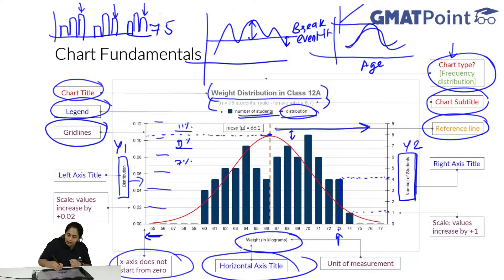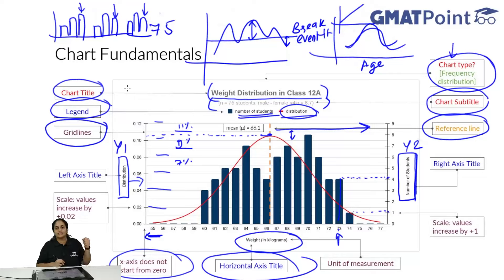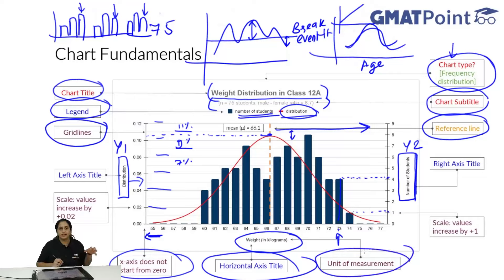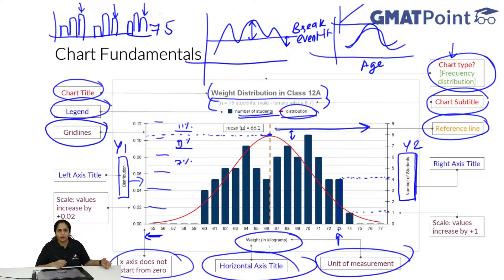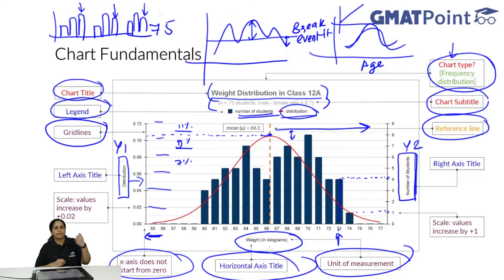Now let us take a look at the units of measurement. The unit of measurement of the x-axis is kilograms. The second y-axis is number of people. The first y-axis is 0.0 to 0.04, so it is basically in percent - the percentage of students. You have to be very careful of the unit of measurement. You should not mix grams with kilograms or kilometers with meters. Sometimes 'revenue in thousands' is given in the axis title - if you don't multiply by 1000, you will get the wrong answer.